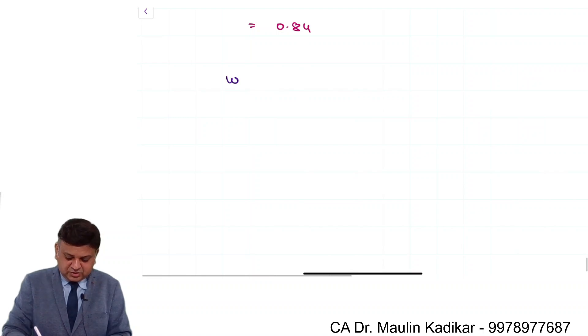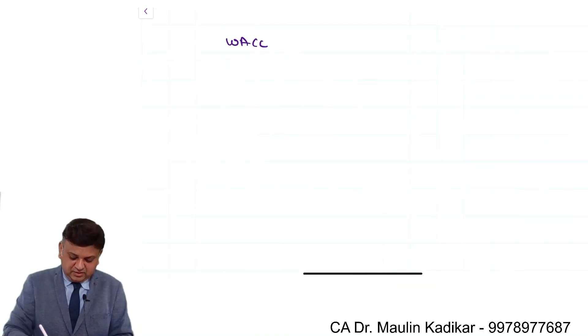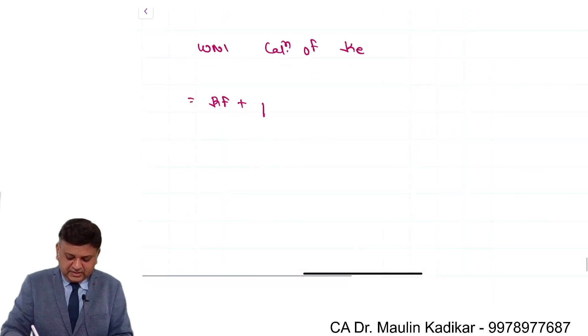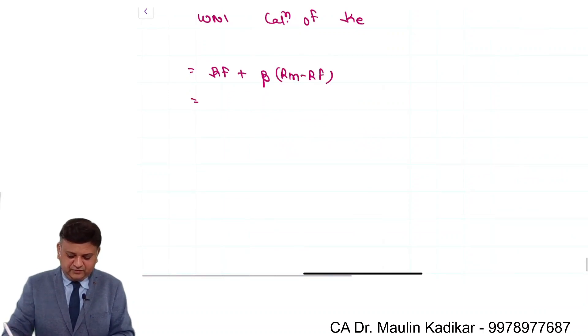Next is the weighted average cost of capital. To compute the same, once again, working out number 1 calculation of Ke. It is RF plus beta into RM minus RF.